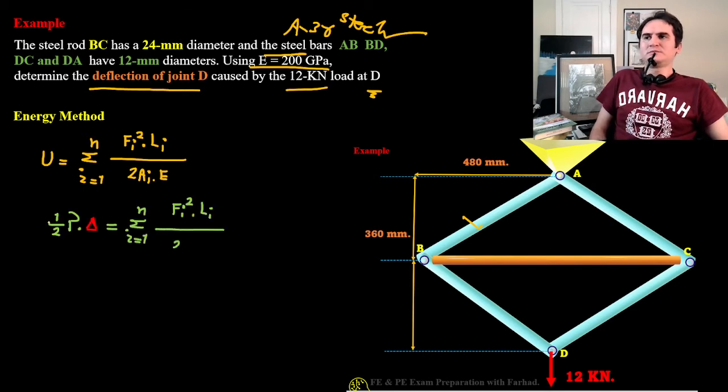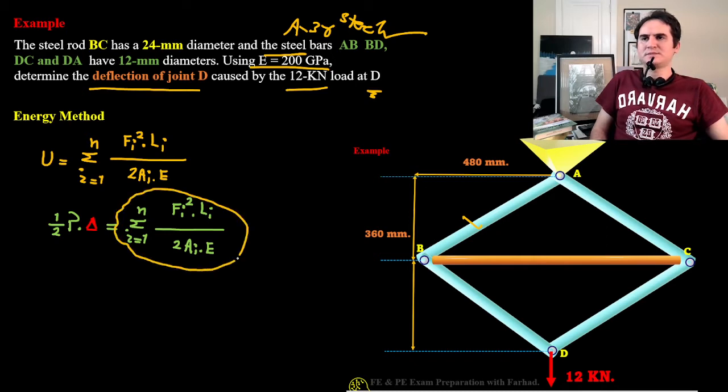The strain energy method says a half of P times delta is equal to summation of FI squared times LI over two area times modulus of elasticity.